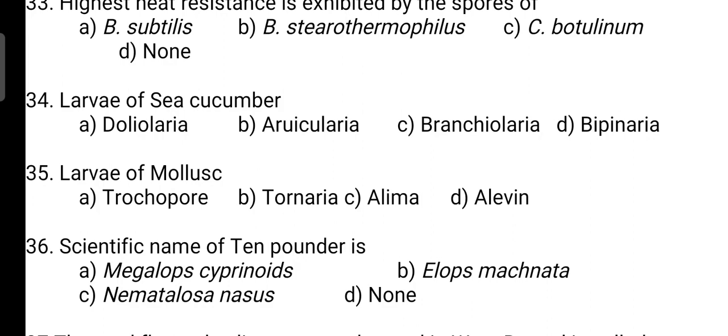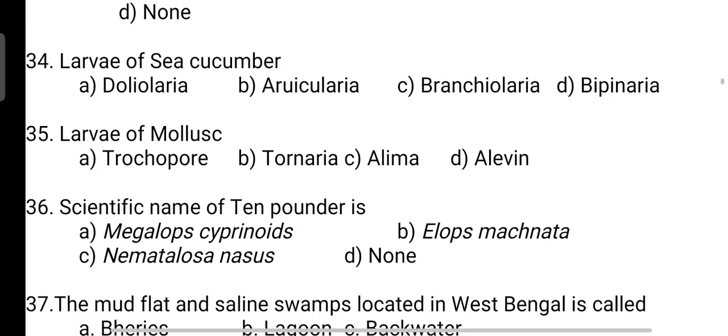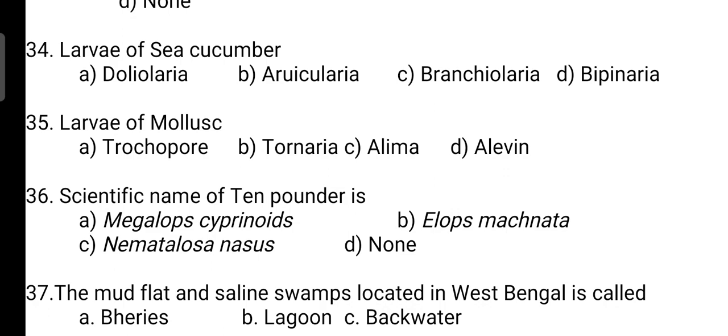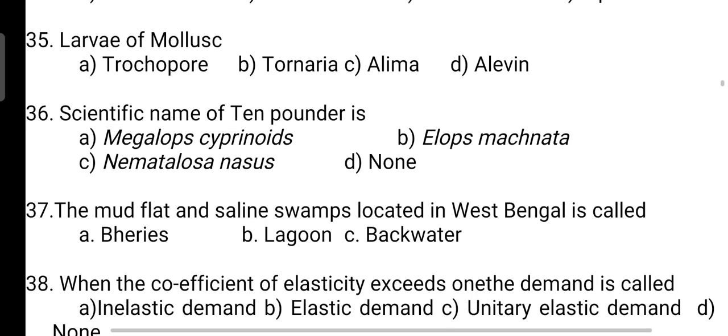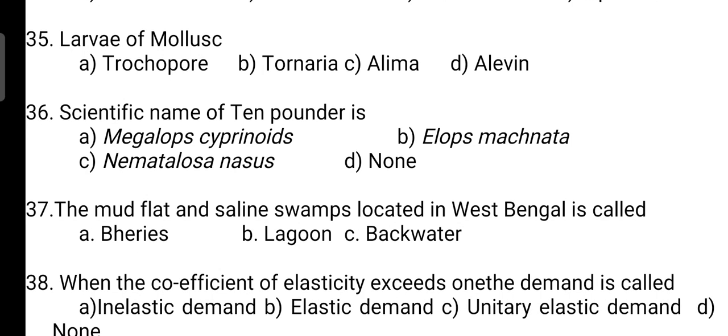Larva of sea cucumber: correct answer is Option B — Auricularia. Next, larva of mollusk: correct answer is Option A — it is trochophore. Next, scientific name of ten-pounder fish: correct answer is Option B — it is Elops machnata.